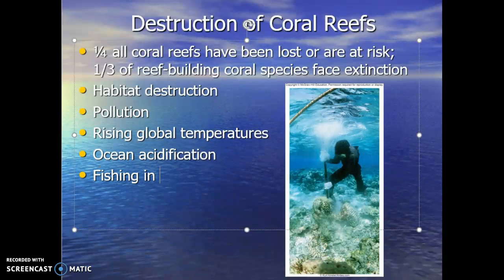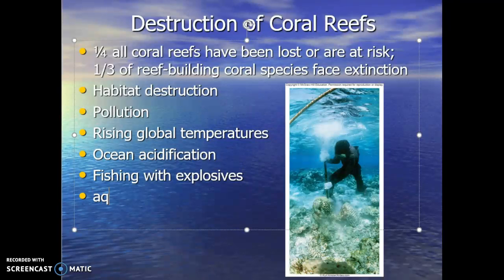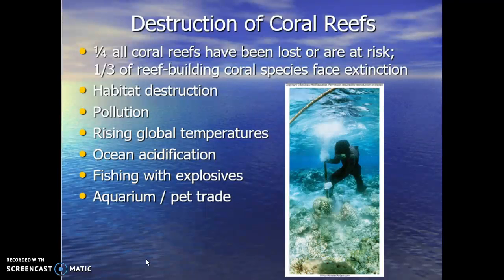In some parts of the world, fishing is done with explosives. A little bit of dynamite thrown in — boom — and all the fish come floating up because they're stunned or outright killed. But everything else in the area also gets hit by those explosions. The aquarium and pet trade is also playing a role in the destruction and decline of coral reefs. These are all things we're going to look at and figure out how we can personally decrease our influence.